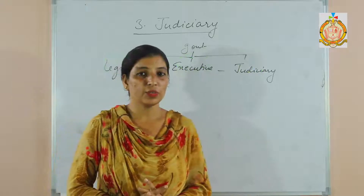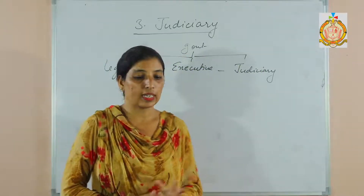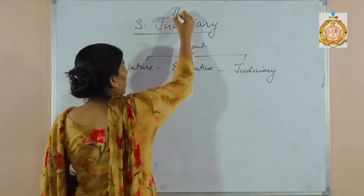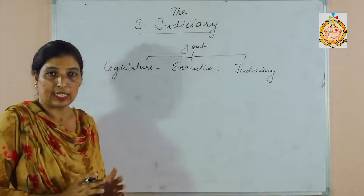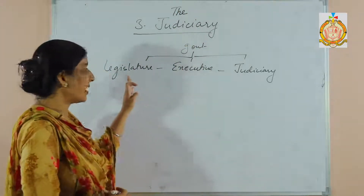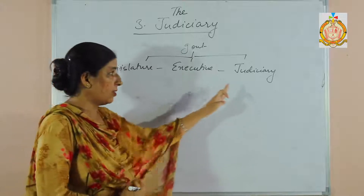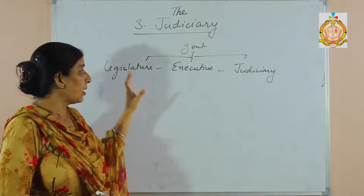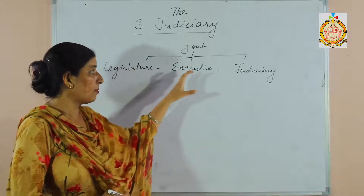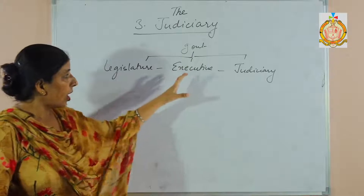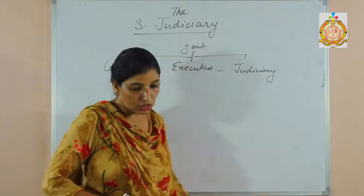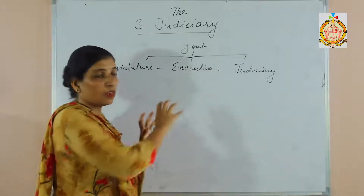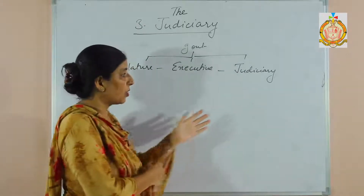Good morning students. Today we are going to discuss the next chapter of your civics, that is the judiciary. Under this chapter we will learn about the judiciary. As you know, government has three organs: first is legislature, second is executive, and the third one is judiciary. Legislature makes laws, executive carries them out, and judiciary checks that all the laws are functioning properly. That is the work of judiciary.